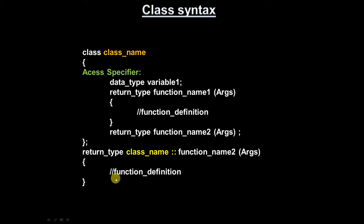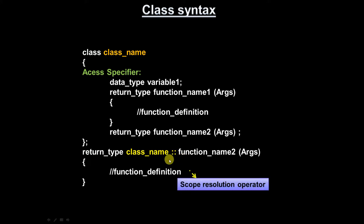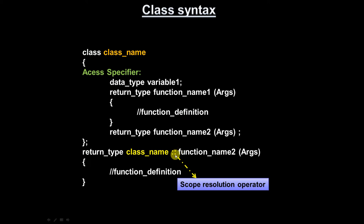When giving the function definition outside the class, you must place the scope resolution operator and the class name before the function name. Without this, the compiler will think it is a global function. But this function is not global — it belongs to the class scope, not the global scope. That is why we must specify the class name with the scope resolution operator.